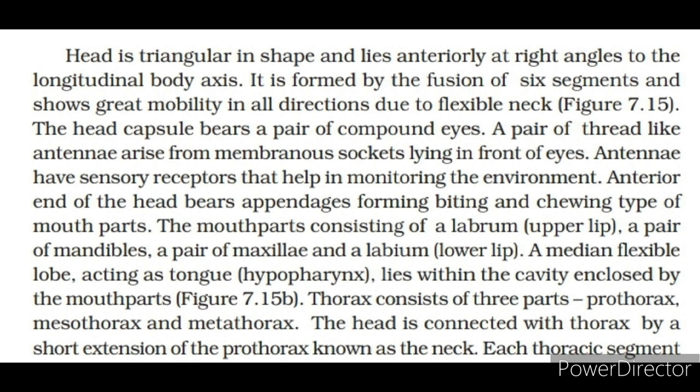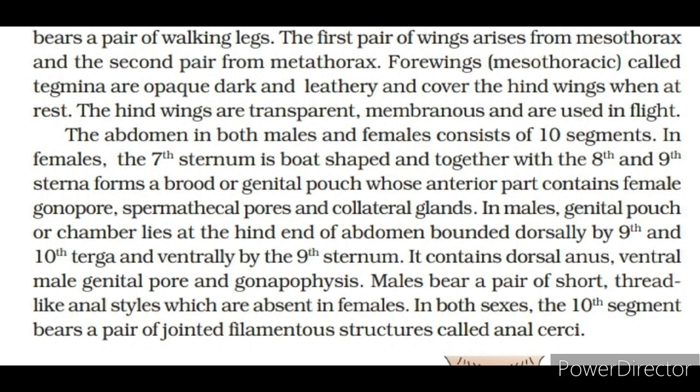The anterior end of the head bears appendages forming biting and chewing type of mouthparts, consisting of a labrum (upper lip), a pair of mandibles, a pair of maxillae and a labium (lower lip). A median flexible lobe acting as tongue, the hypopharynx, lies within the cavity enclosed by the mouthparts. The thorax consists of three parts: prothorax, mesothorax and metathorax. Each thoracic segment bears a pair of walking legs. The first pair of wings arises from the mesothorax and the second pair from the metathorax. The mesothoracic wings, called tegmina, are opaque, dark and leathery and cover the hind wings when at rest. The hind wings are transparent, membranous and are used in flight.